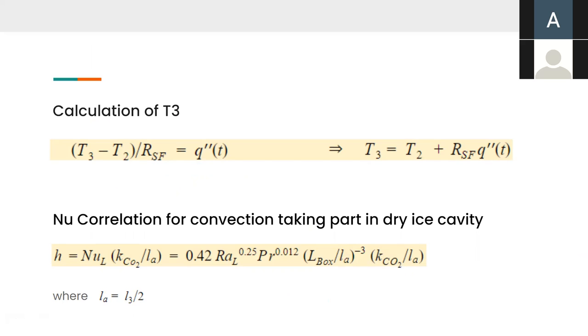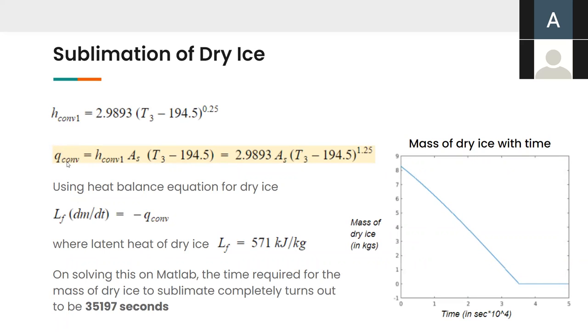Next, we find a relation between T2 and T3 using steady state equation, where we take the resistance of the styrofoam layer. And because the dry ice is sublimating, we need a Nusselt number correlation for convection taking part in the cavity, which turns out to be this, which helps us in finding the heat transfer coefficient, H. Using this heat transfer coefficient, we find out the rate of convection and which in turn can be used in the heat balance equation to find out the rate of change of mass of the dry ice with time. So, as you can see, the mass initial mass of dry ice was around 8 kgs. This is found out using geometry and density values. So, we found out that it takes around 35,000 seconds to reduce the mass from around 8 kgs to 0, which turns out to be our first phase answer, the first answer.